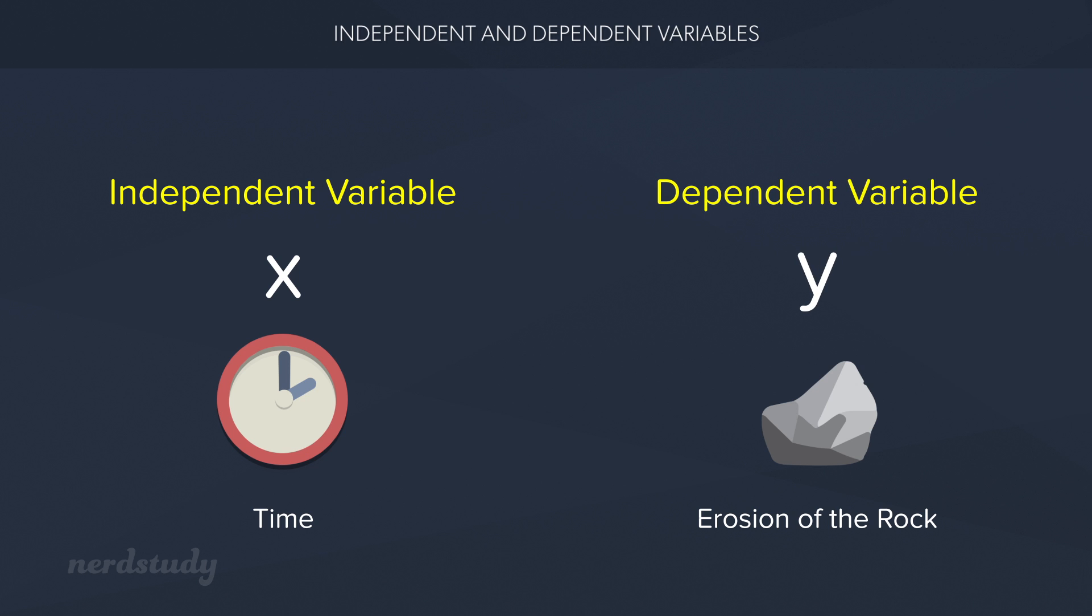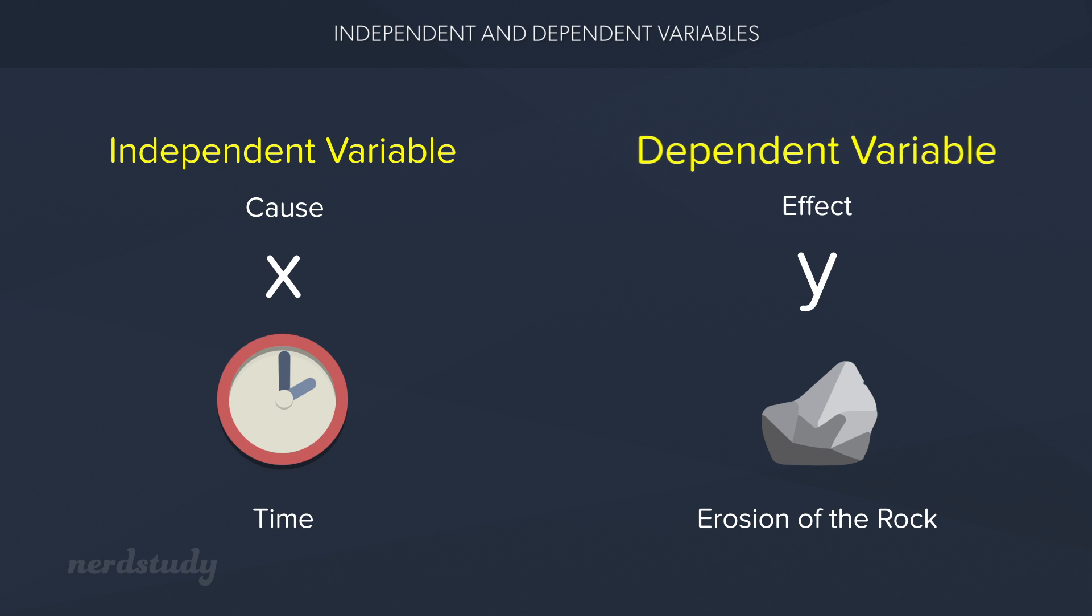In general, you should ask yourself, is there a cause and effect relationship between my two variables? And if there is, then the cause is definitely the independent variable and the effect is the dependent variable.